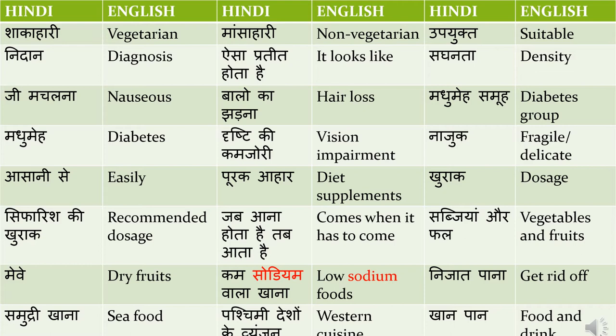'Jab ana hota hai tab aata hai' means 'it comes when it has to come' — this is like a proverb. Sometimes the patient asks why this has happened to them, and the doctor responds with this saying. 'Sabziya aur fal' means vegetables and fruits. Sometimes the doctor says you should eat more vegetables and fruits — 'sabziya aur falo ko apne ahar mein shamil kijiye'.